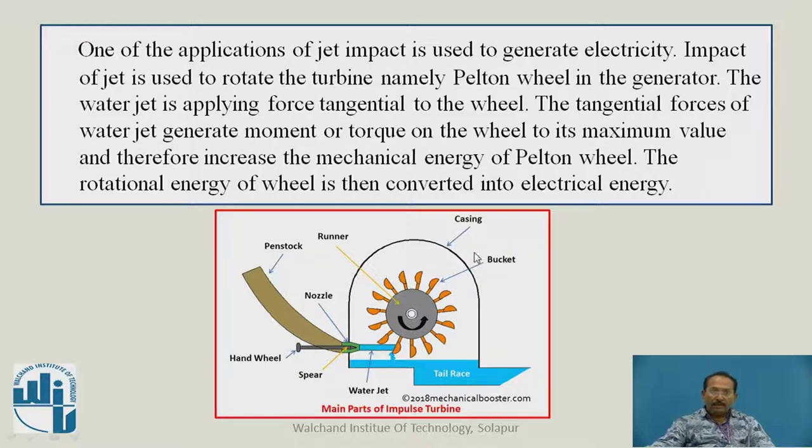This is the figure of the Pelton turbine. This is the jet which impacts on these cups mounted on the wheel and it rotates. Some main parts are penstock, runner, casing, bucket, nozzle, the rim of the wheel, spear and water jet.